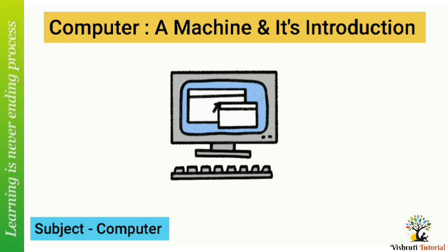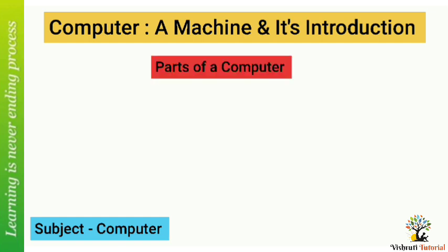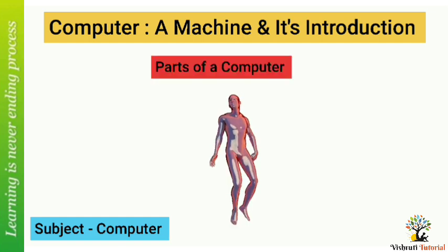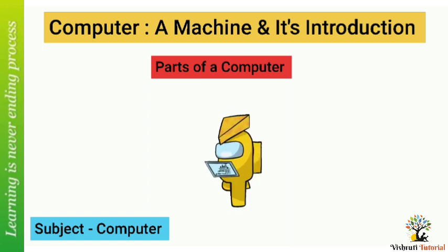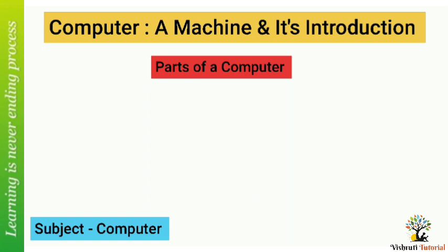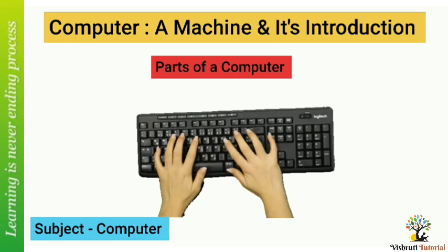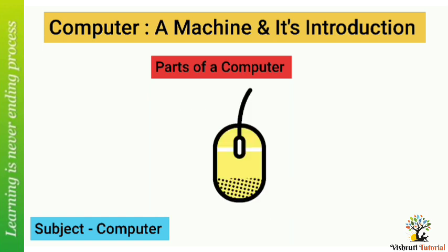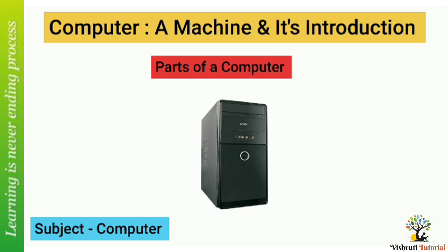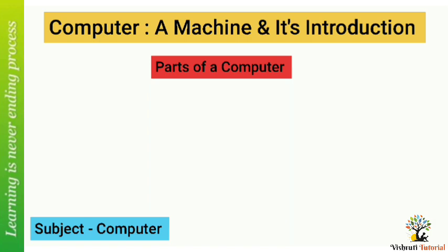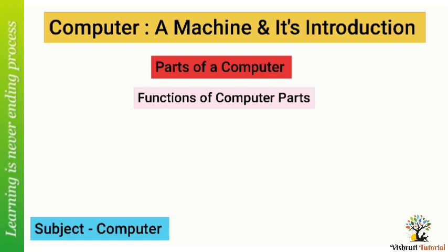The computer is a machine. It works on electricity, but a computer does not work on its own. It has many parts, like our body, and these parts work together to do various tasks. The main parts of a computer are the monitor, keyboard, mouse, and system cabinet, also called CPU — Central Processing Unit.